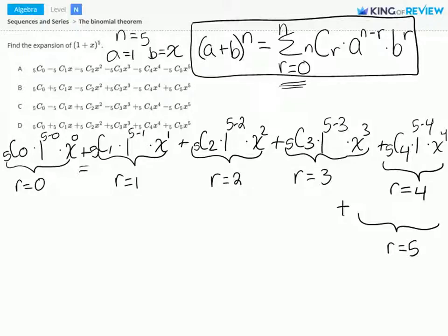This is 5C4 times 1 to the 5 minus 4 power times x to the fourth power, and 5C5 times x to the fifth power.